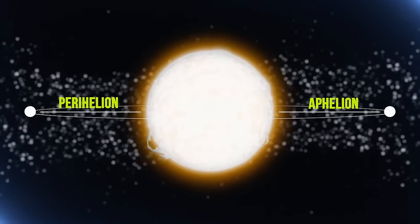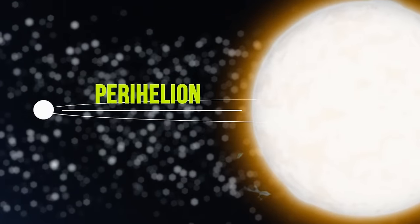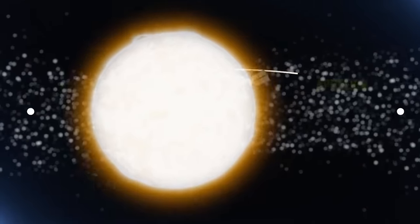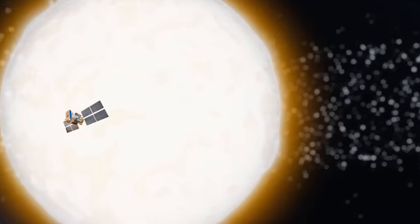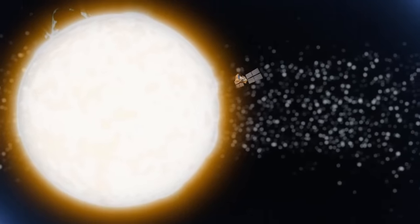The two side boosters undock, leaving the common booster core for further ascent. When in orbit, the rocket releases its payload. This is the Parker Solar Probe, the first spacecraft to touch the sun. And we'll follow its journey step by step.